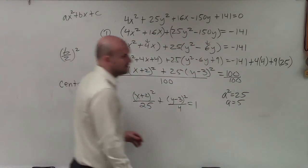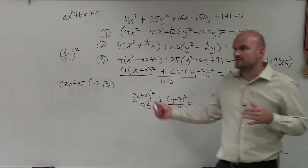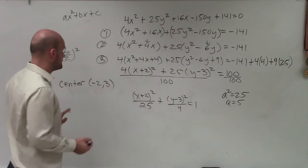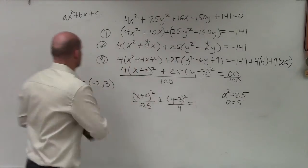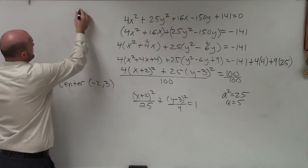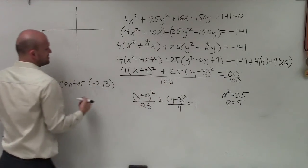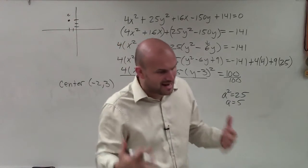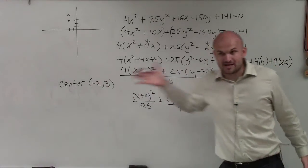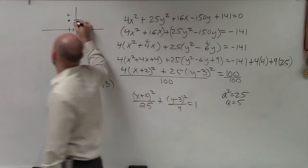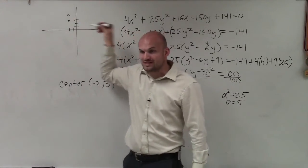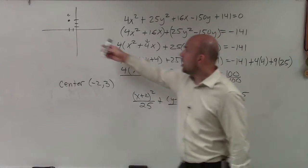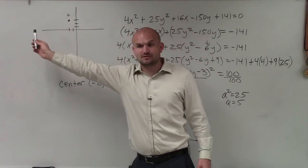And did it say sketch the graph? In your homework, did you guys have to sketch the graph? Yes. So we're going to want to sketch the graph. Man, I'm running out of space. Let's do it right here. So I'm sketching the graph. First thing I'm going to want to do is plot my center, which is that negative 2, positive 3. Now, Brittany stated that since my a was larger, and it's under the x, I'm going to have a horizontal major axis. So that means my foci and my vertices are all going to lie on this horizontal line.